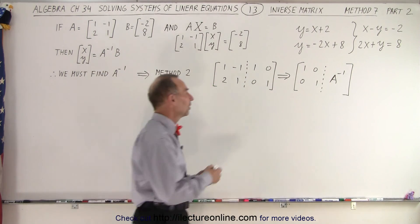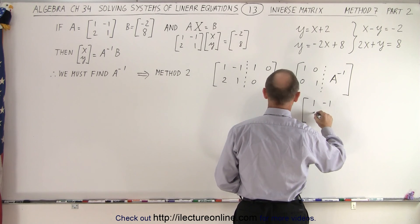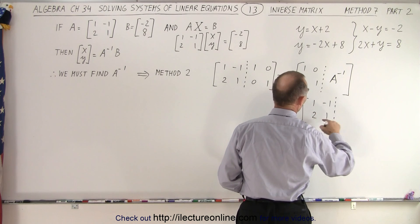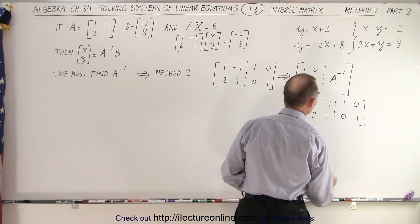So let me rewrite this over here. So we have 1, negative 1, 2, 1. And then we augment it with the identity matrix which is like this.